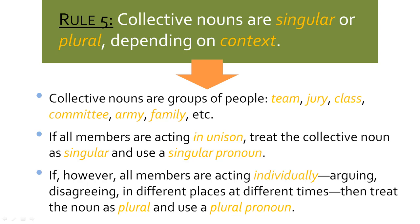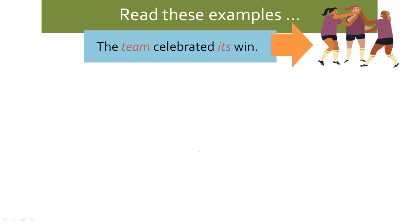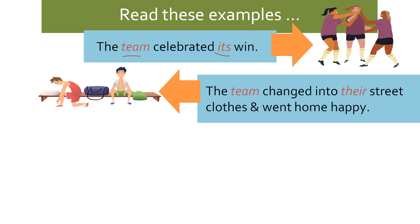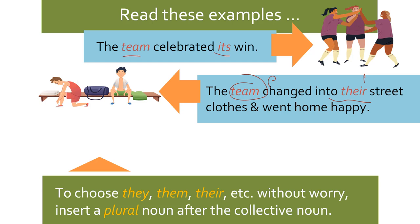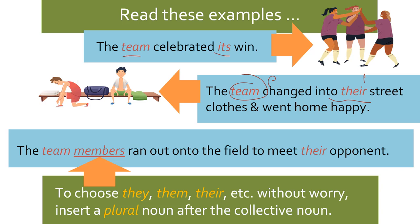Here are examples: 'The team celebrates its win' — the team is acting as a unit, doing something in unison, so 'its' is singular. 'The team changed into their street clothes and went home happy' — the team is doing things individually, so we use a plural pronoun. If you want to avoid the worry, insert a plural word — 'the team members ran out to the field to meet their opponent' — now you have a clear plural antecedent and don't have to worry anymore.